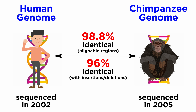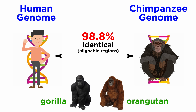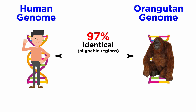This means humans and chimpanzees are more closely related than rats are to mice, coming in with around 95% alignable regions. Since then, we performed more sequences and discovered that humans and chimpanzees are more closely related to one another than either is to a gorilla or an orangutan, the other living hominids. Compared to the nearly 99% similarity of alignable regions of humans and chimps as well as bonobos, humans share around 98% with gorillas and 97% with orangutans.